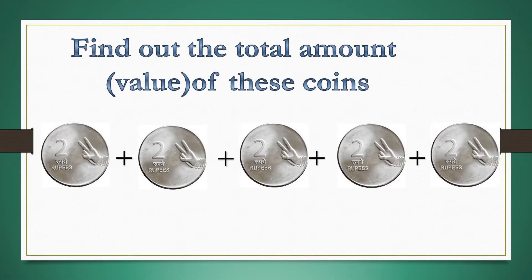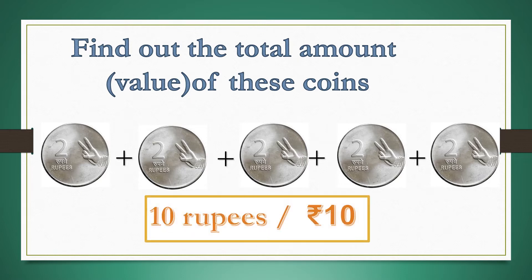In this example, we see that 2 rupees coins are given and there are five 2 rupees coins. When we add them together: 2 plus 2 is 4, plus 2 is 6, plus 2 is 8, plus 2 is 10. So we have 10 rupees here — five 2 rupee coins give us 10 rupees.